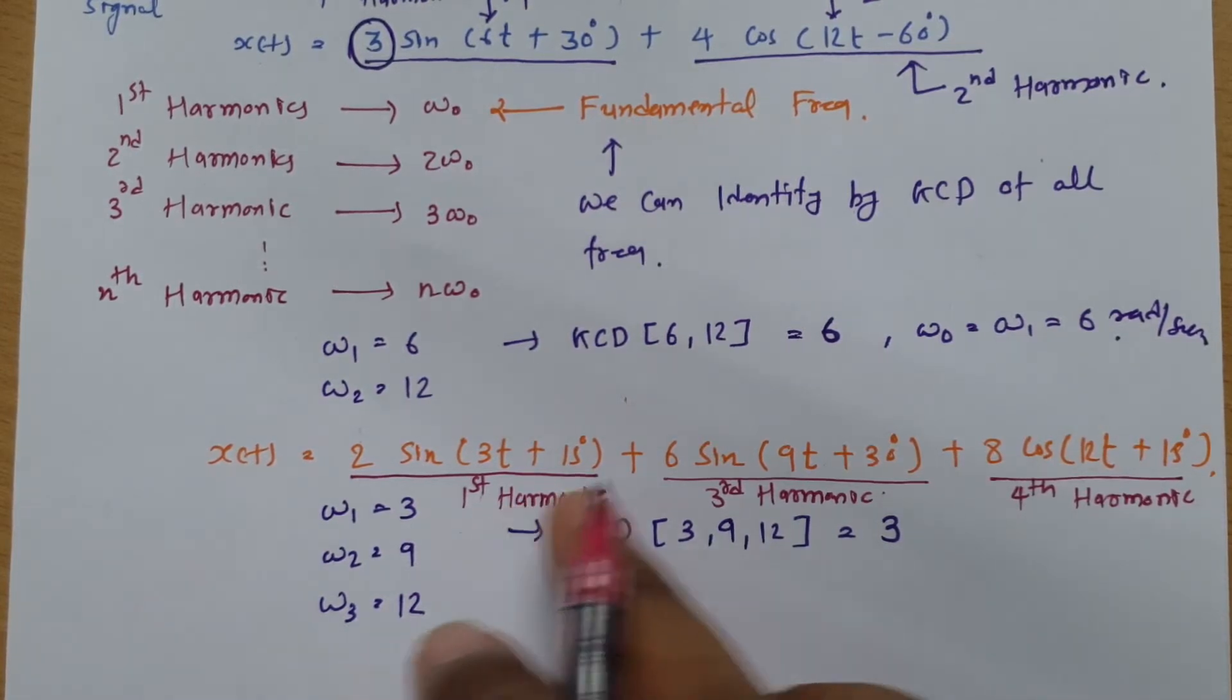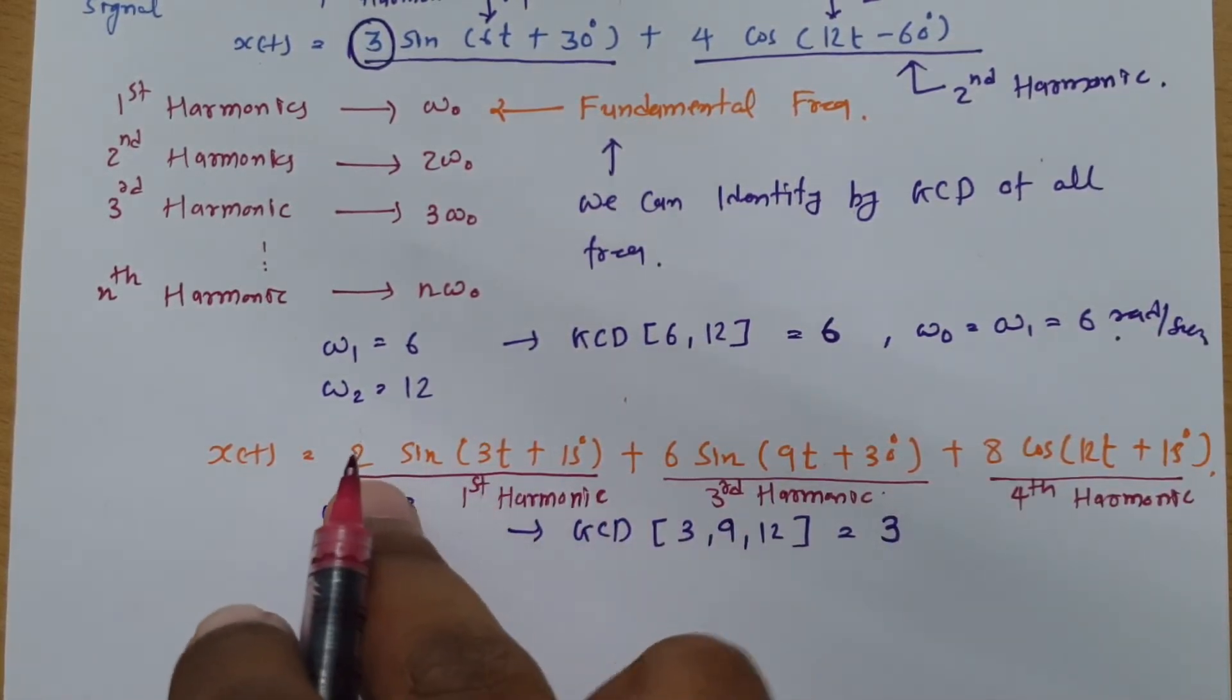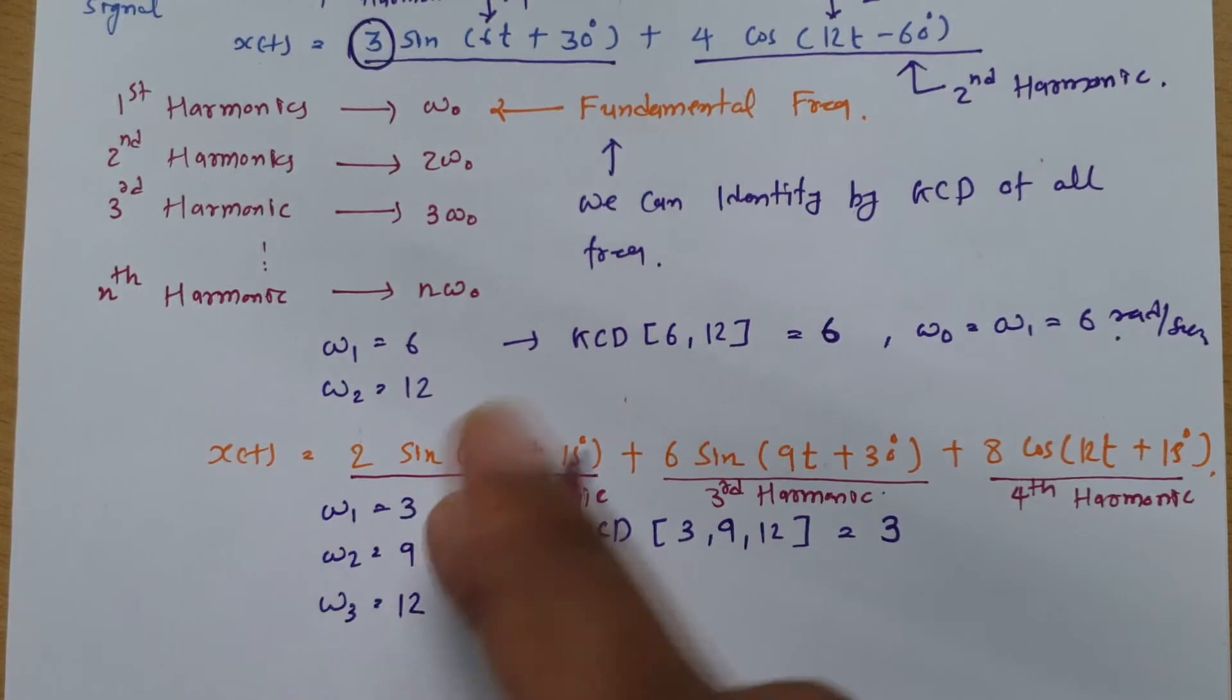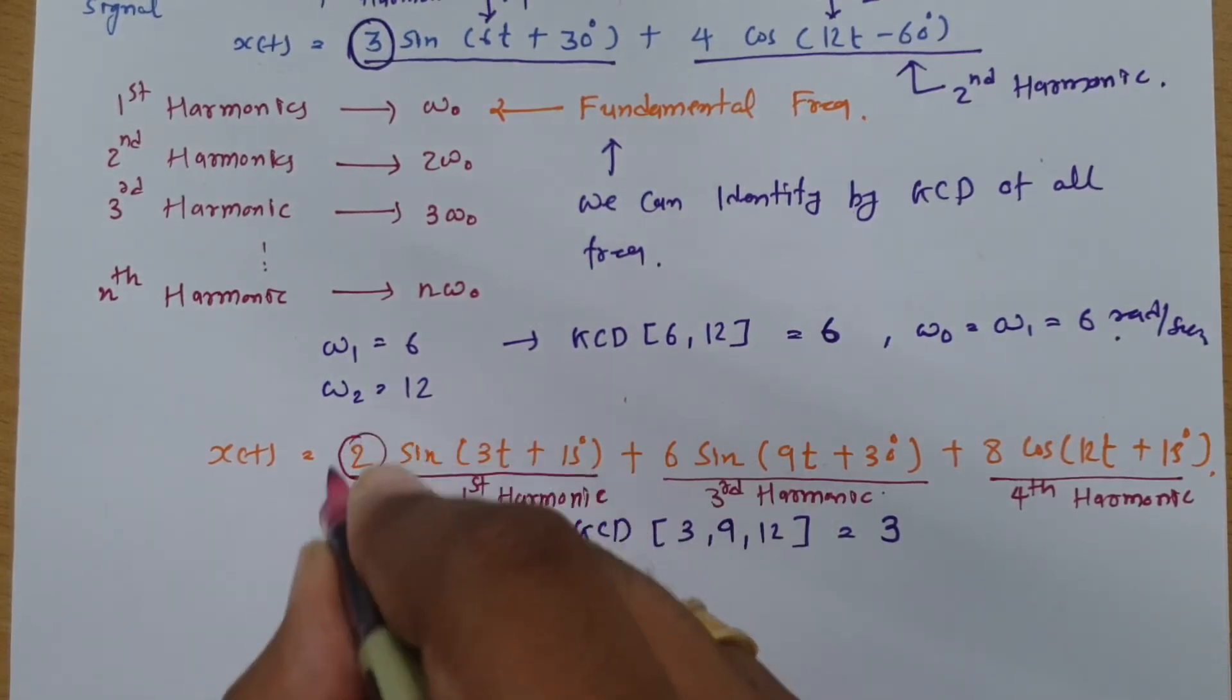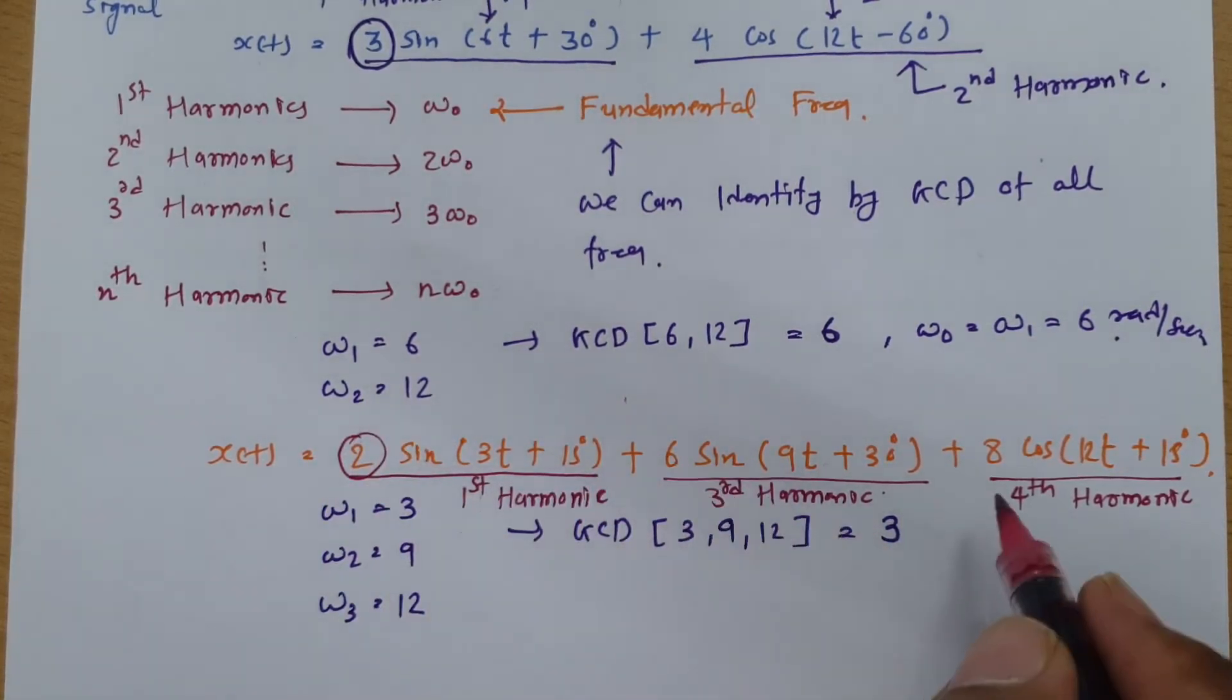And amplitude of each harmonic. That we can calculate. Over here. For fundamental. Amplitude is 2. For third harmonic it is 6. And for fourth harmonic it is 8. So there could be question. Based on this basic understanding. I hope that you are getting it. From what I explain here. And you can definitely write your questions and queries here. Based on whatever I am teaching. And it should have relevance with what I teach here on my channel.